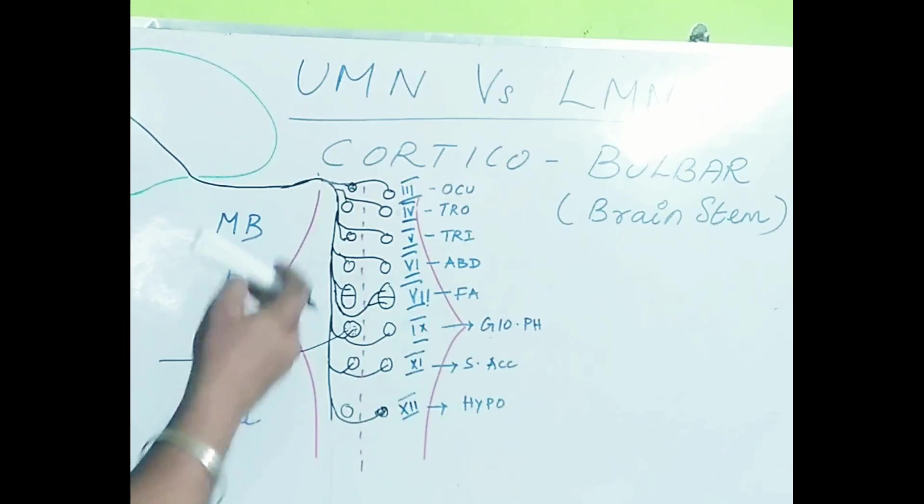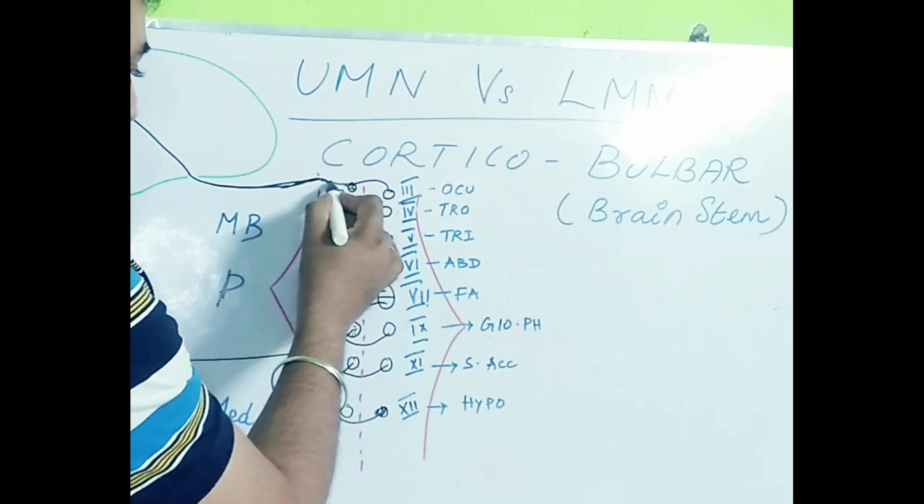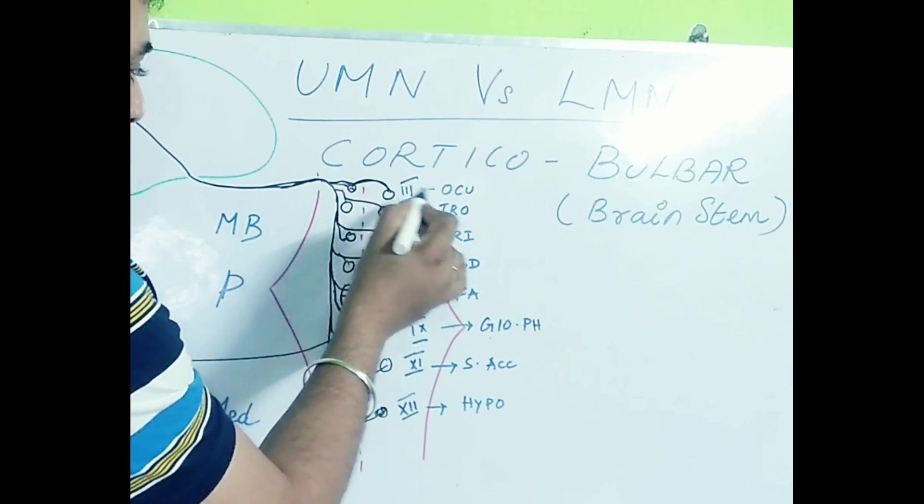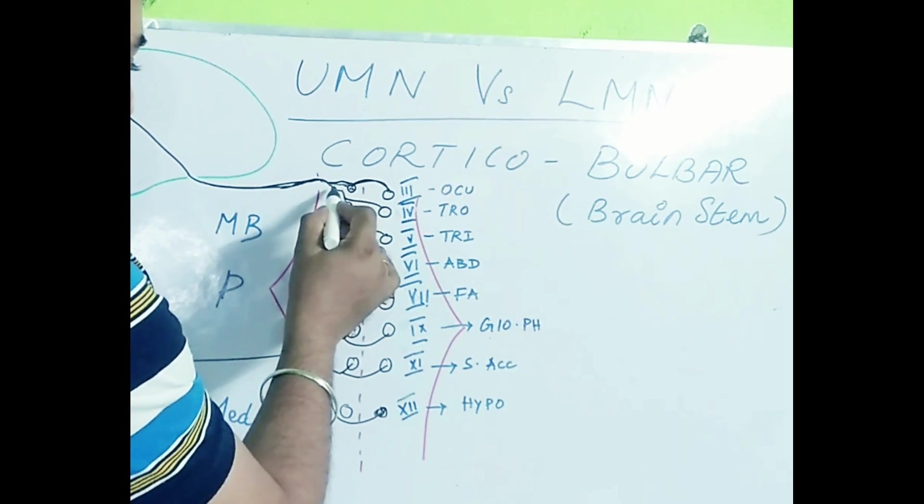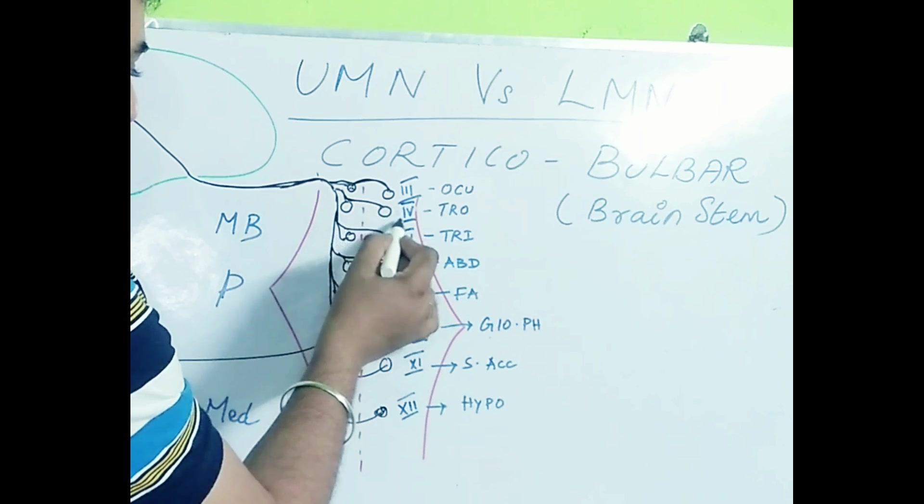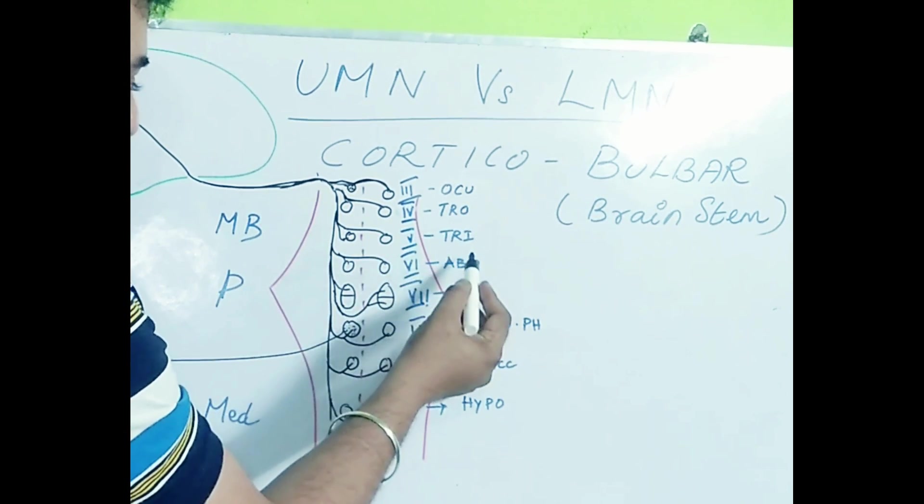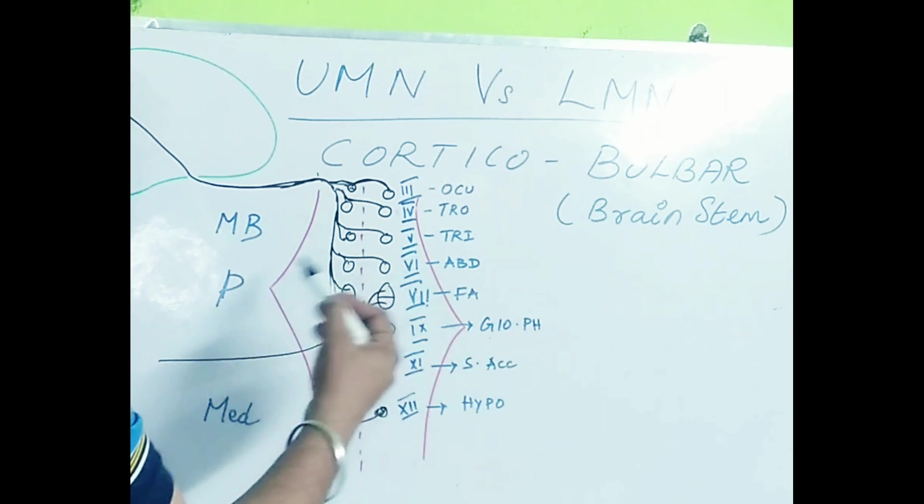So you can see here I have mentioned it like it comes here and innervates onto both sides of the oculomotor nerve nuclei. Next is the trochlear. For trochlear also it innervates onto either side. For abducens it innervates onto either side.